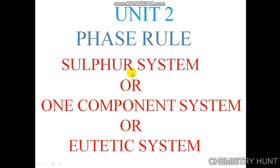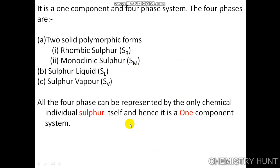Good morning. Today we are going to see the sulphur system, also called the one component system. It is a one component and four phase system. The four phases are two solid polymorphic forms: rhombic sulphur and monoclinic sulphur. The third is sulphur liquid and the fourth is sulphur vapour. All four phases can be represented by the only chemical individual sulphur itself, and hence it is a one component system.